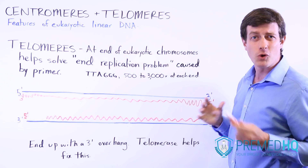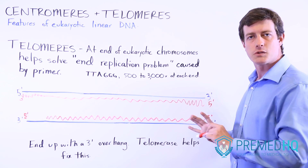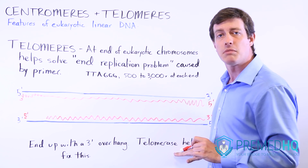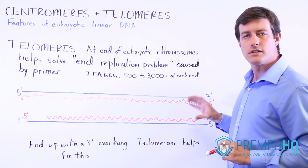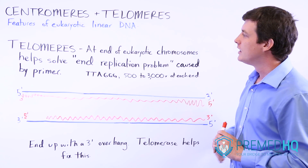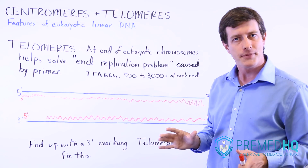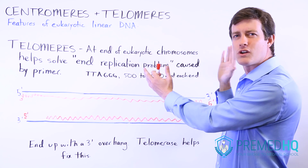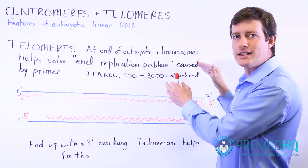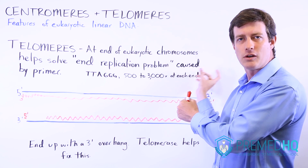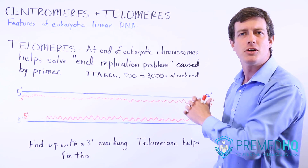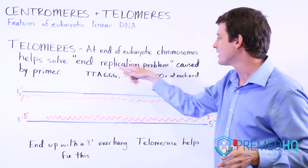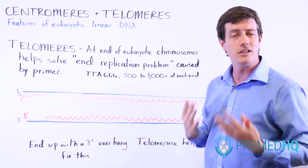If telomerase shows up on a question, there's a good chance it will be explained in a passage, because you're not required to explicitly know many details about it. But you should be aware that it exists and can help solve the end replication problem even further. Remember that the first thing that solves it is simply having telomeres — they give you extra wiggle room to lay down primers and lose material without losing the genetic information.